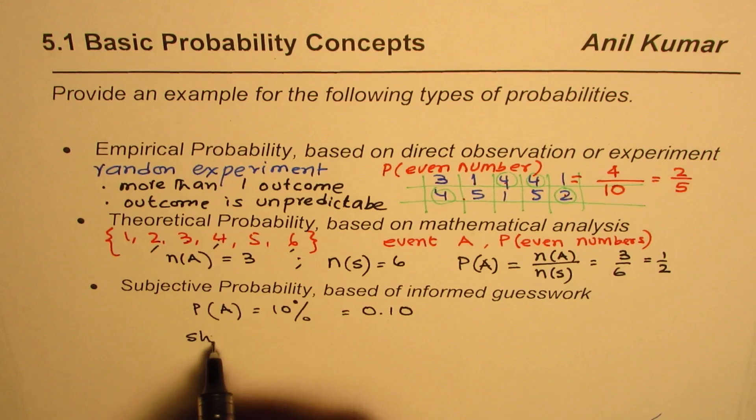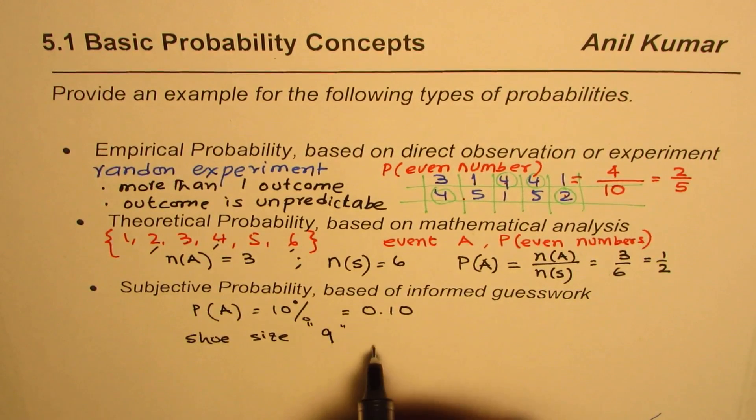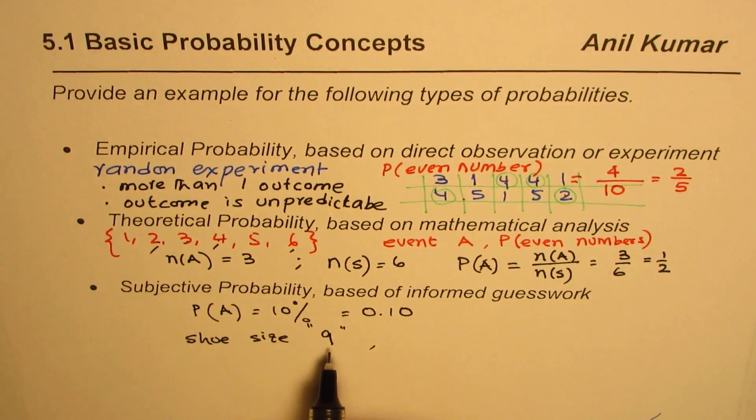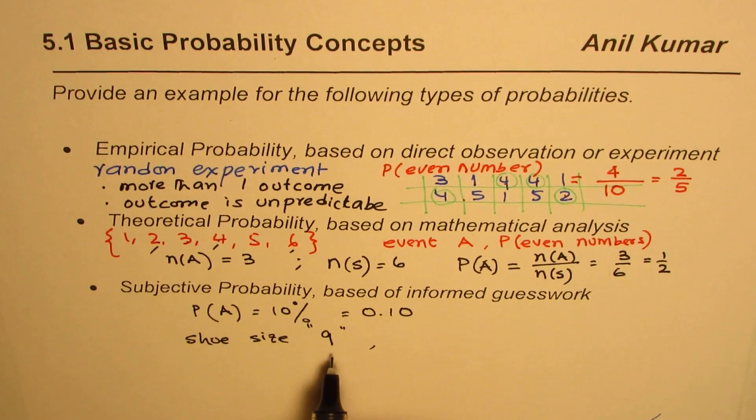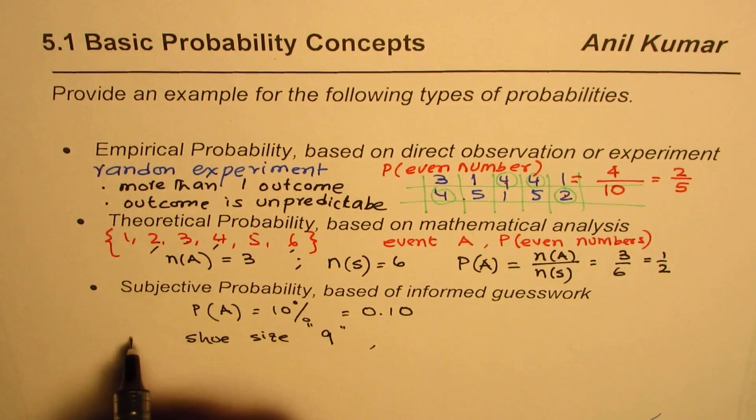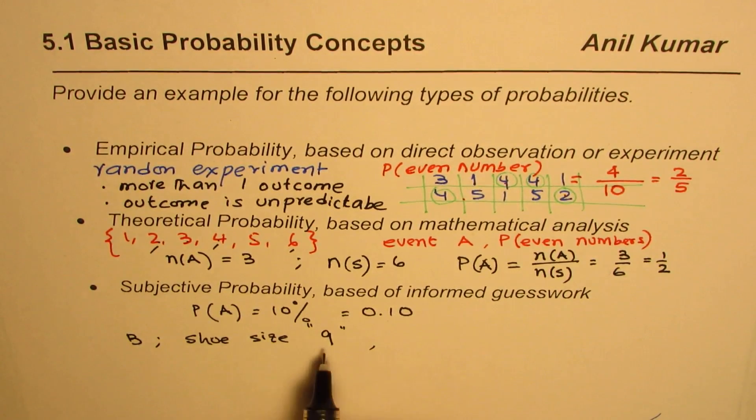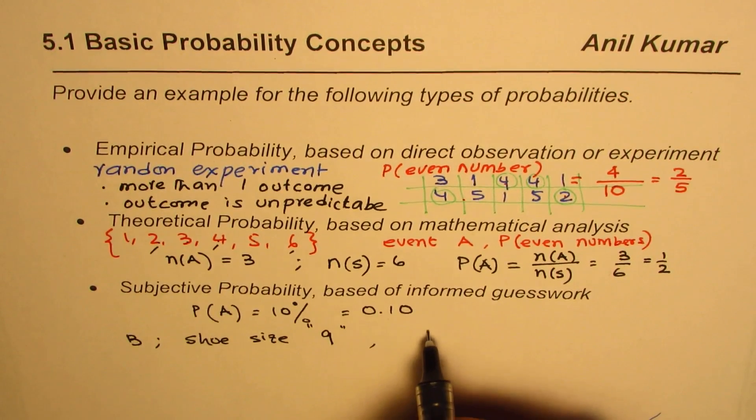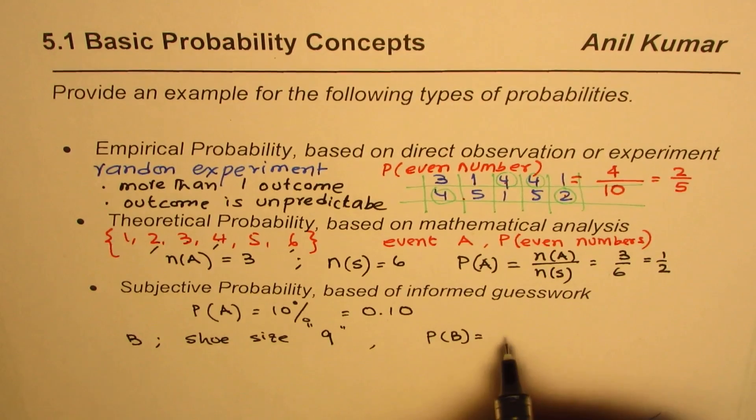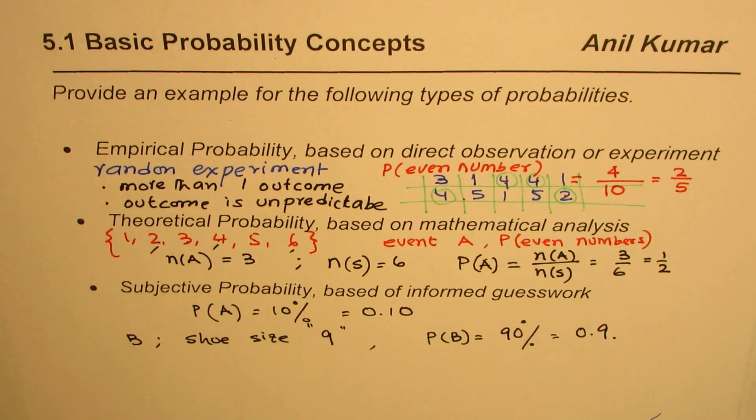Well let me give you another case here. Let us say my shoe size is 9. Now next year what is the probability of my purchasing the same shoe size. We can reason it out that normally the shoe size doesn't change that much. So the probability is very high. Let us say this is the event B, selecting the shoe size next year. In that case of purchasing the same size, the probability is relatively high. I could put this as 90 percent or 0.9. So this probability, the subjective probability, is based on the informed guesswork.